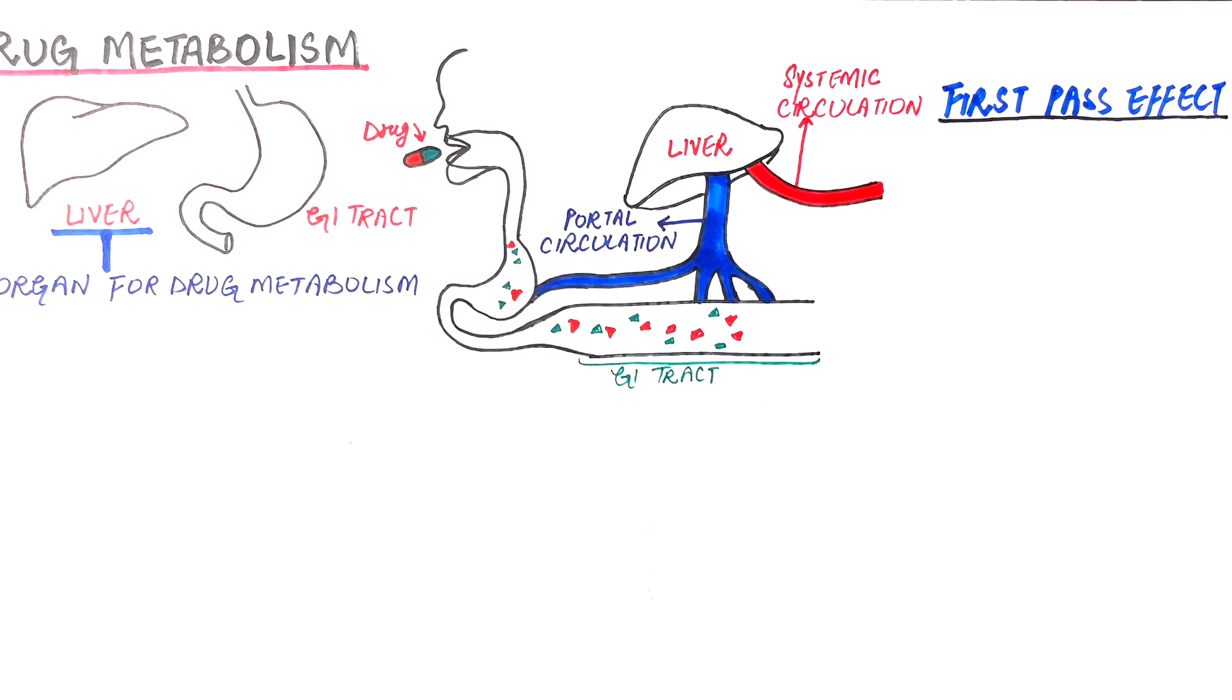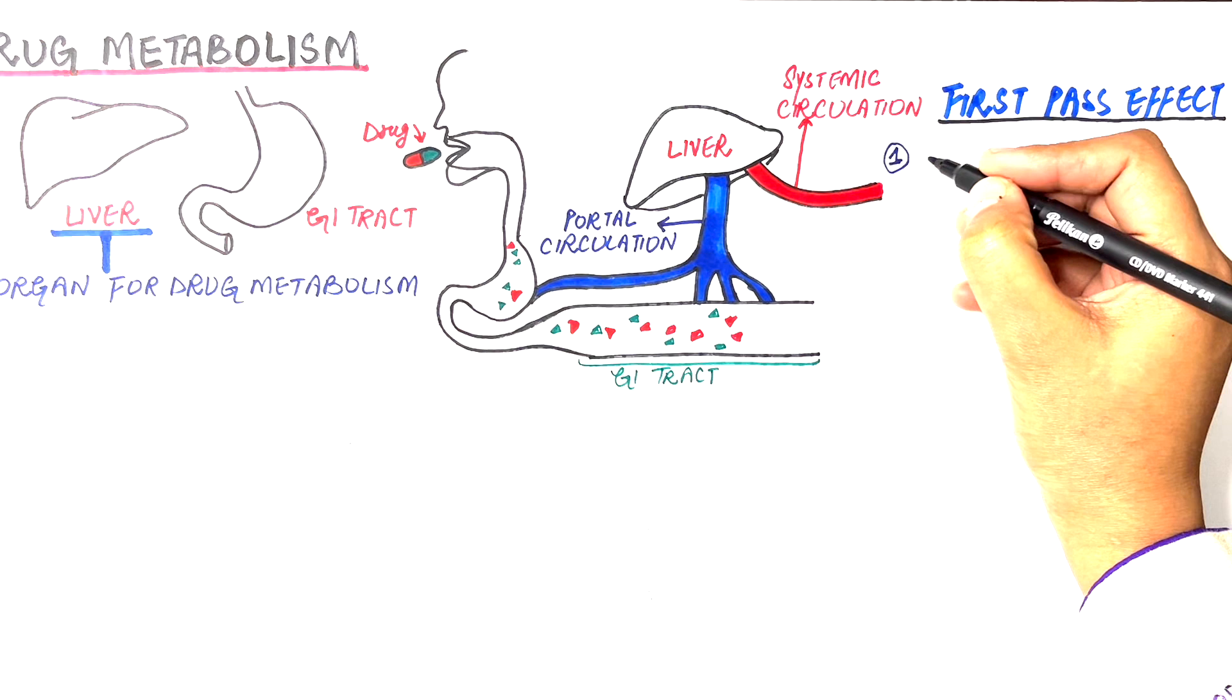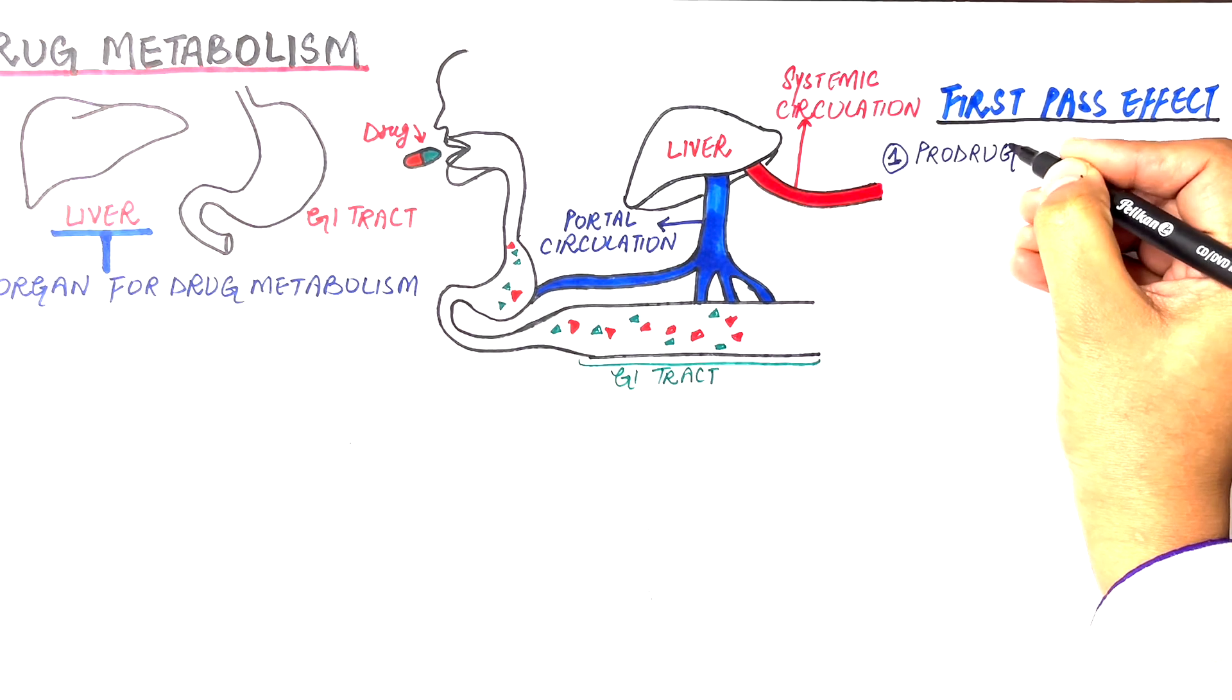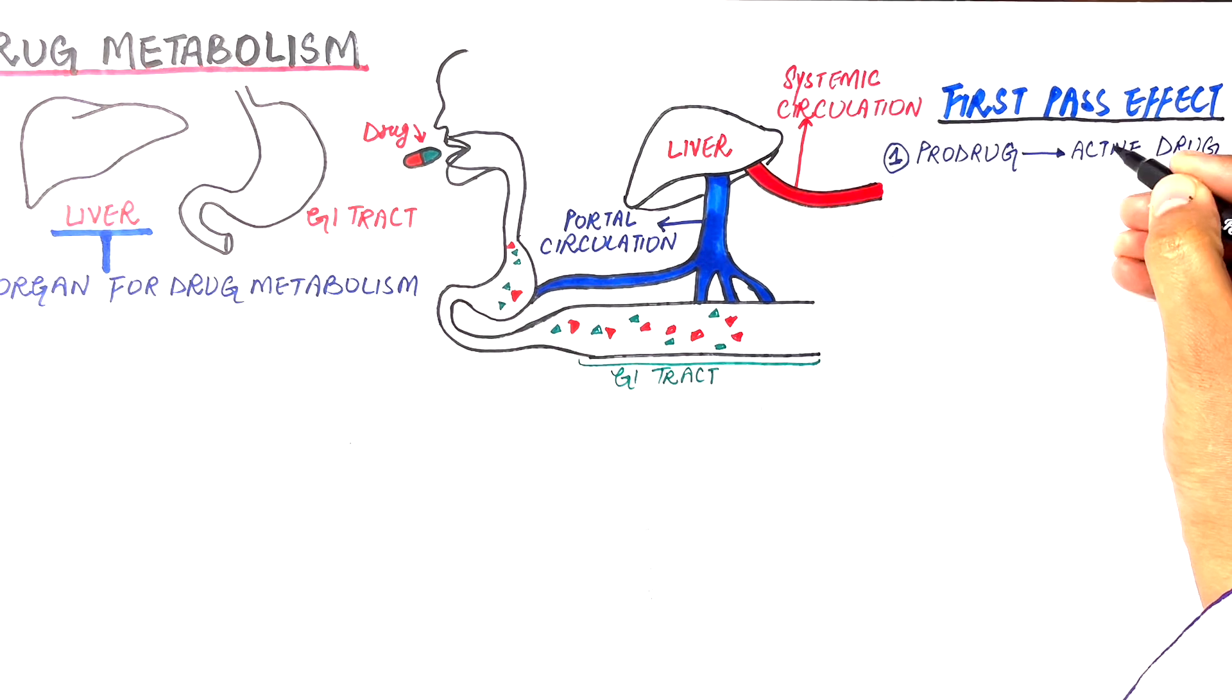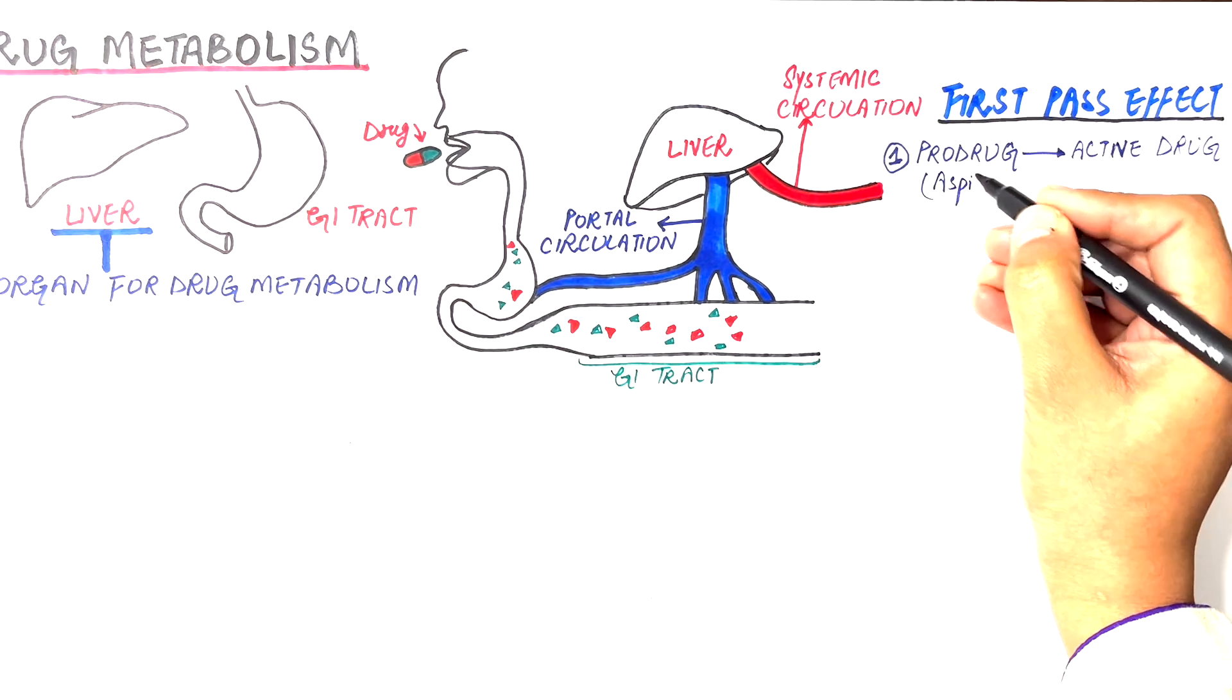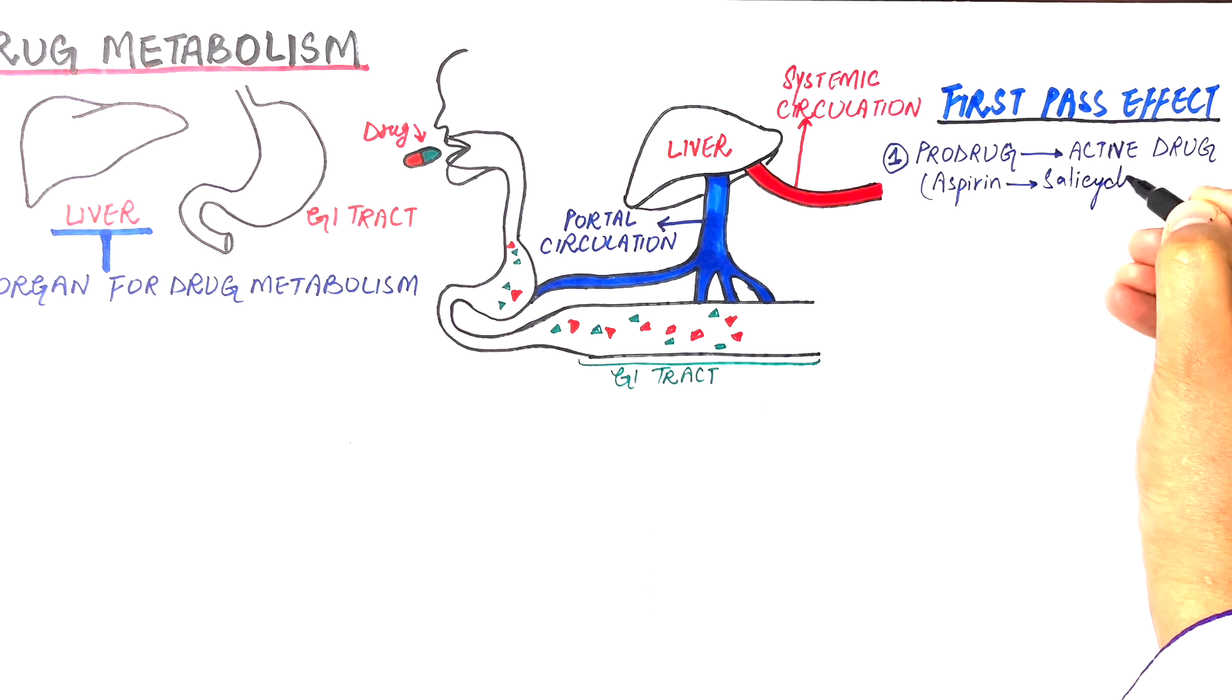This first-pass metabolism in liver can either metabolize an inactive or a prodrug into an active drug for its intended clinical actions. An example of a prodrug is aspirin, a prodrug which once taken orally turns into salicylic acid in the liver, which is an active form of the aspirin drug.